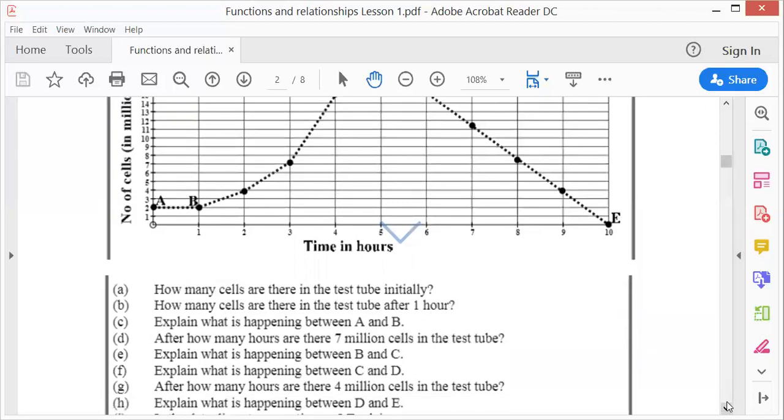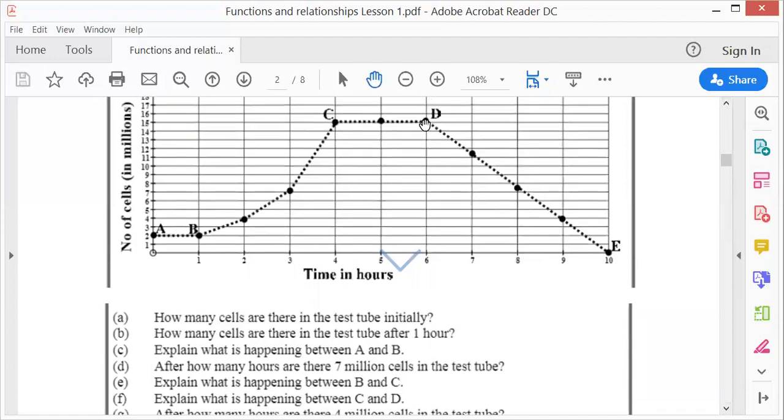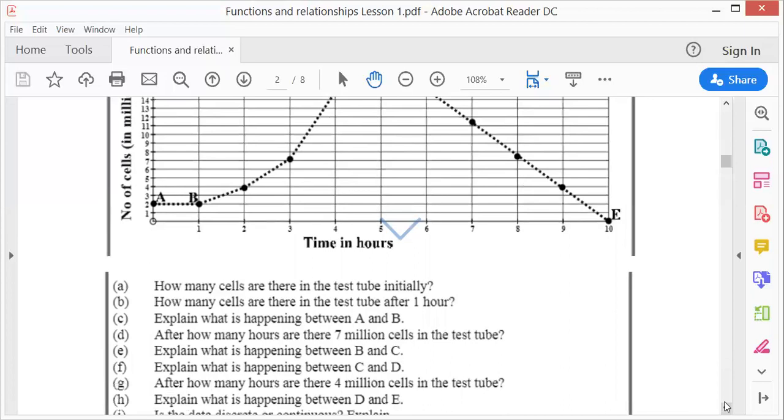Explain what's happening between D and E. Between D and E, it's linear, a straight line, but it runs in the opposite direction. That means there's no more growth, it's decay. The bacteria is dying because the numbers are decreasing. Time is still marching on but numbers are decreasing. A positive slope to the right is increasing, a graph to the left is decreasing.